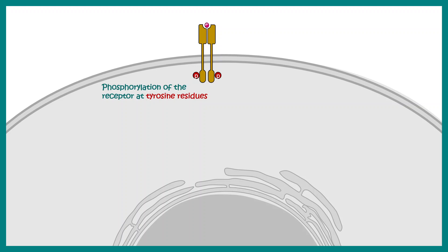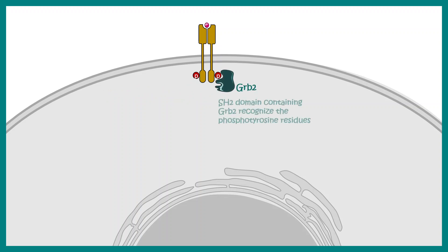To this phosphorylated tyrosine residue, specific adaptor proteins can dock, such as GRB2. GRB2 protein has an SH2 domain which recognizes phosphotyrosine residues.